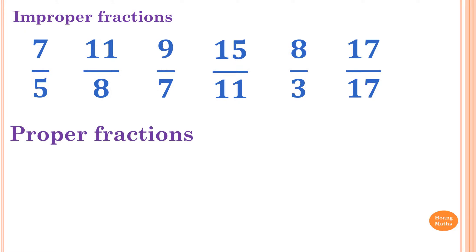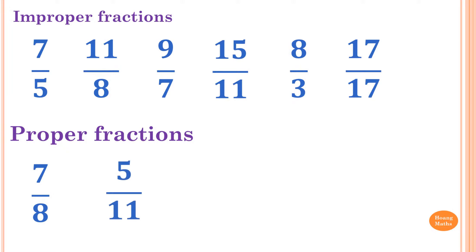A proper fraction is when the numerator is smaller than the denominator, or the top number is smaller than the bottom number. For example, 7 over 8 — 7 is less than 8, so this is a proper fraction. Also 5 over 11, 3 over 7, and 9 over 17.